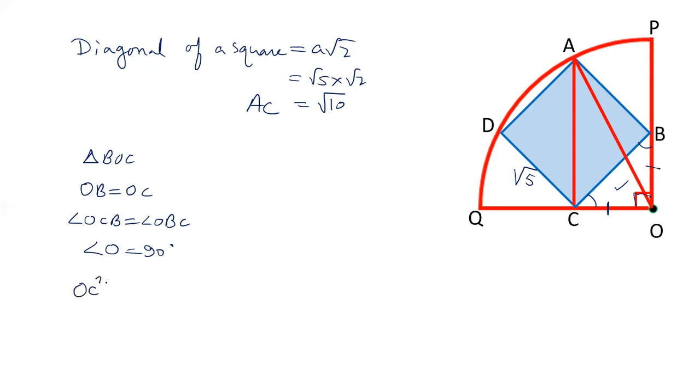So OC² + OB² = BC². BC is √5. OC, let's say it is x. So x² + x² equals (√5)². That is 2x² = 5.